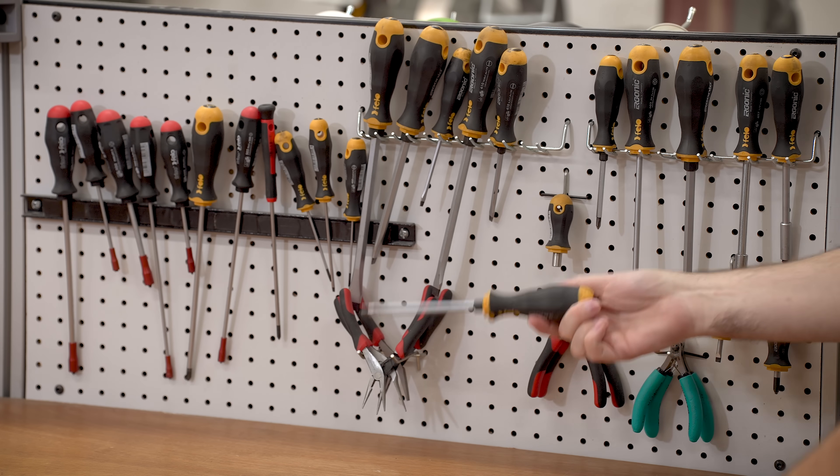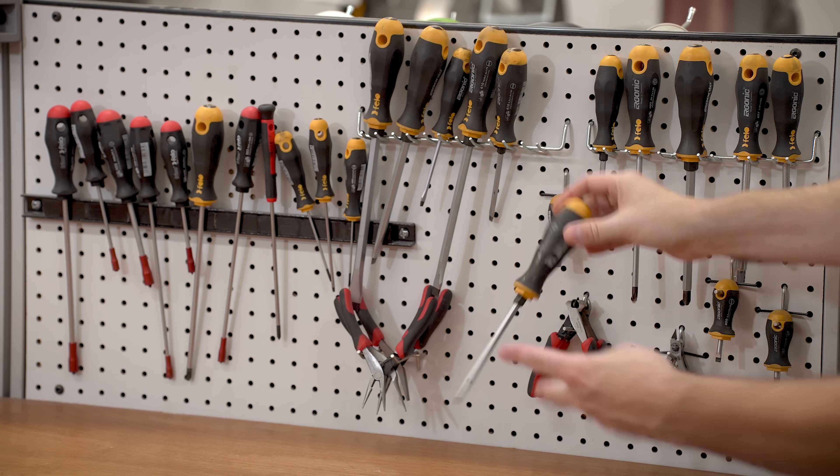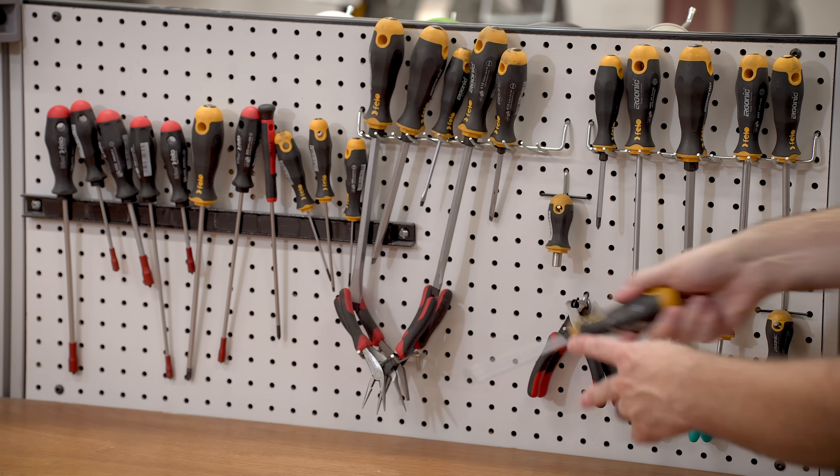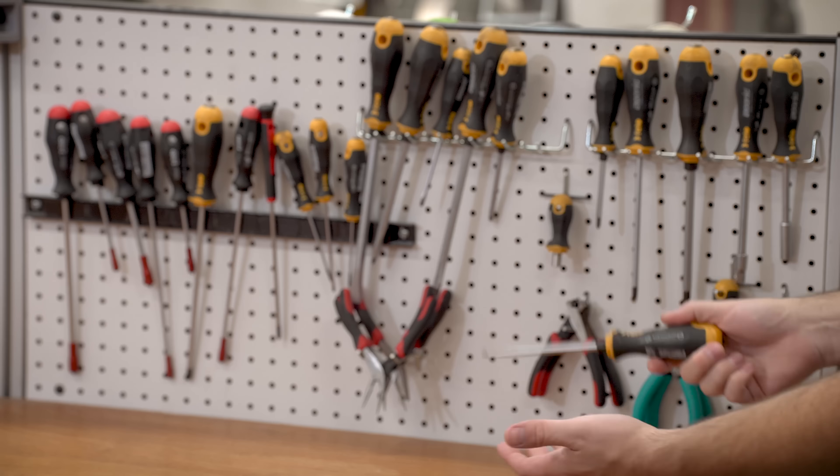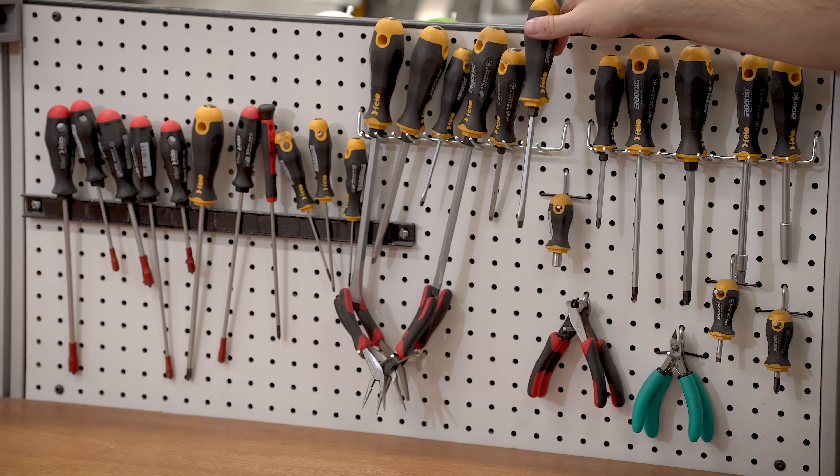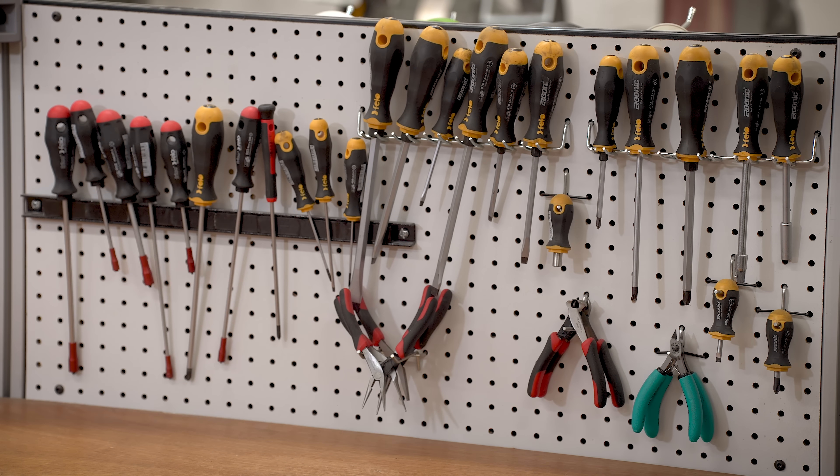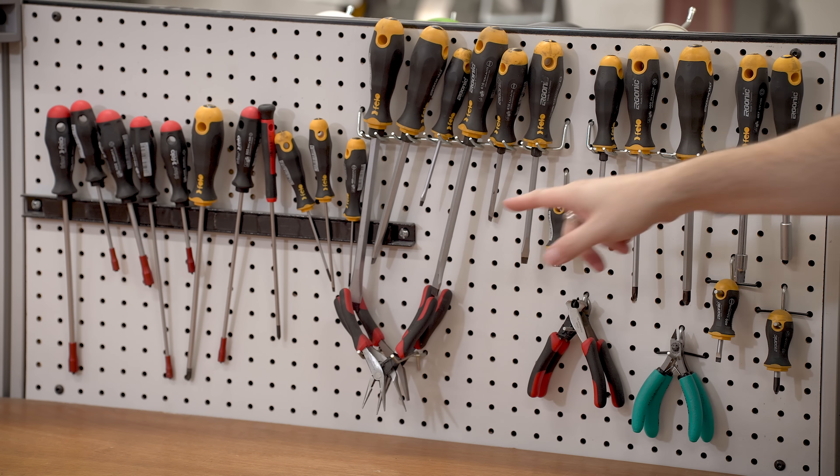For holding pretty much any tool on a pegboard you have the hanger style, you have a magnetic style, then you have some kind of clip style. That's really the only three ways you can do this. So I've got the hangers and then the magnetic over there.